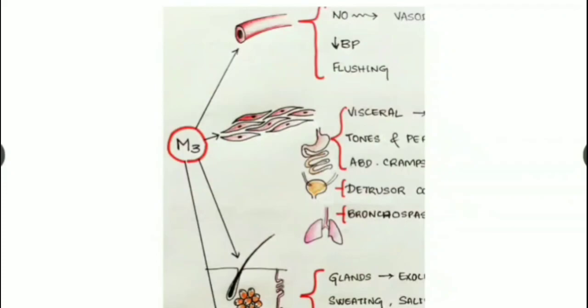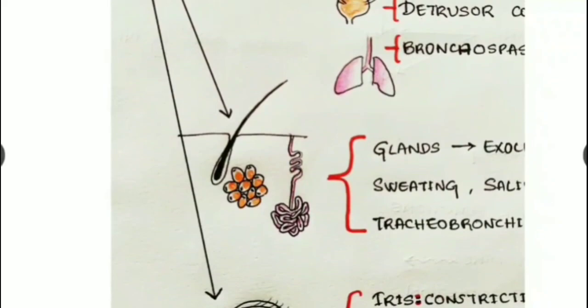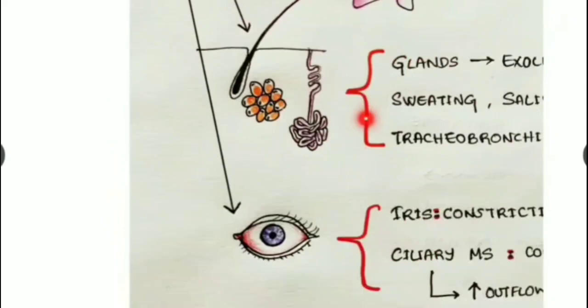M3 receptors are located at many sites: first at the blood vessels, second at smooth muscles located at the GIT, urinary bladder, and lungs, third at the exocrine glands such as sweat glands, sebaceous glands, and lacrimal glands, and finally in the eyes.